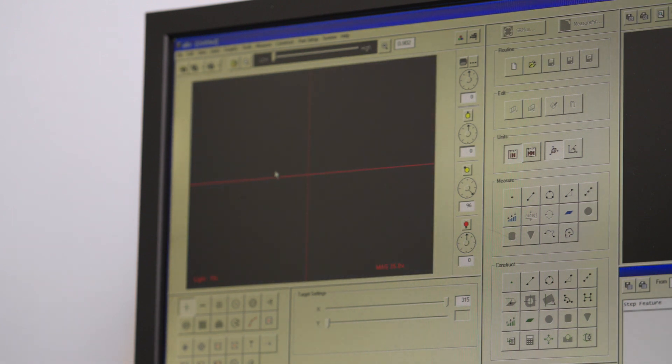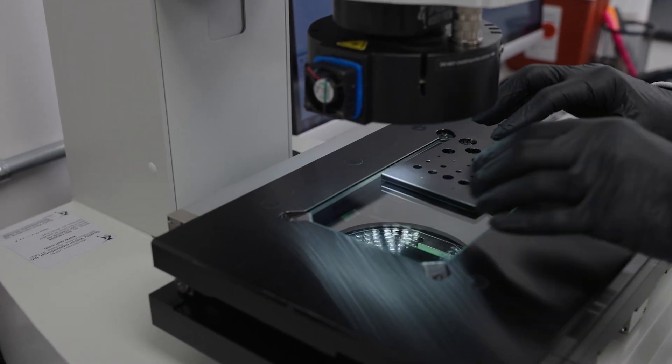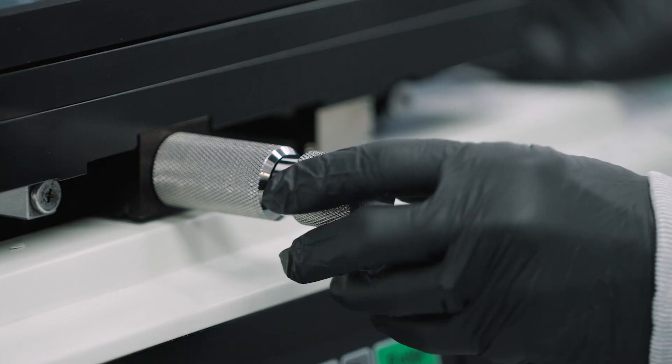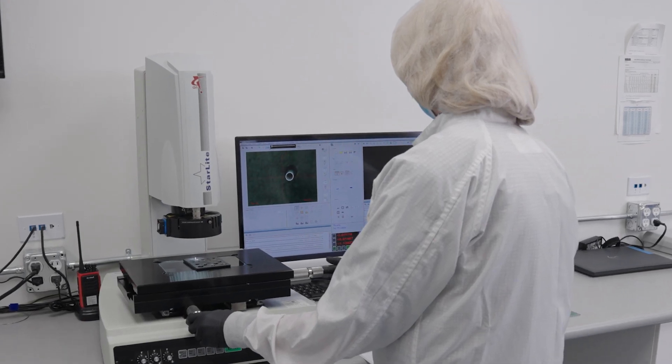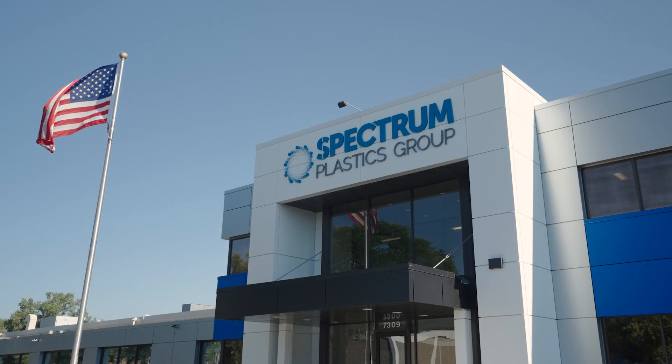Once a robust measurement system is in place, we verify that it is repeatable and reproducible through measurement system analysis, utilizing tools such as ANOVA Gauge R&R.